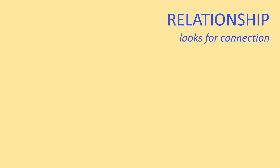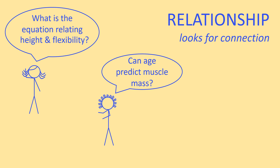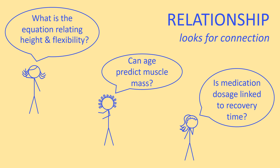Relationship, on the other hand, could look like, for example, looking for an equation between height and flexibility, or asking whether age predicts muscle mass, or seeing if medication dosage is linked to recovery time. In every one of these scenarios, we're seeking out correlation or causation, or some sort of prediction from one variable to the other.